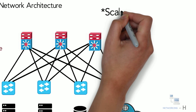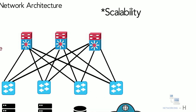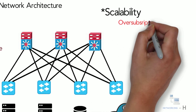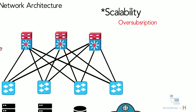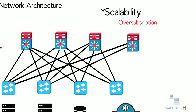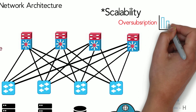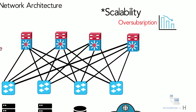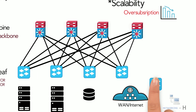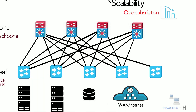Another important advantage is scalability. If oversubscription of a link occurs, the process of expanding capacity is straightforward. An additional spine switch can be added and uplinks can be extended to every leaf switch, resulting in the addition of interlayer bandwidth and reduction of oversubscription. If device port capacity becomes a concern, a new leaf switch can be added by connecting it to every spine switch and adding the network configuration to that switch.